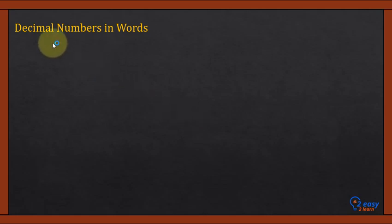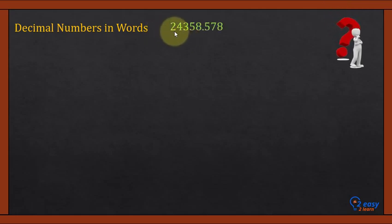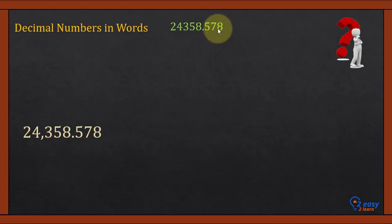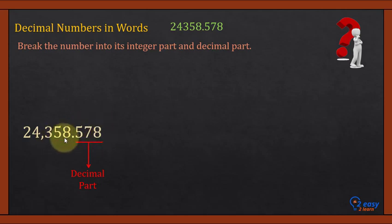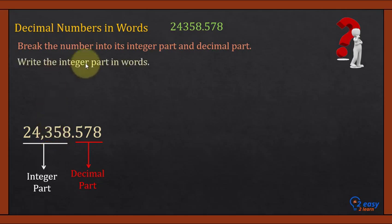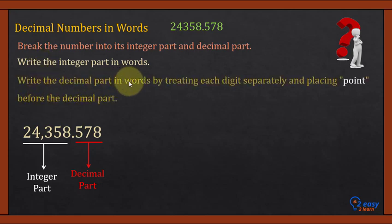Now, how to write decimal numbers in words? For example, we have the number 24,358.578. Break the number into its integer part and decimal part. After the decimal point is the decimal part, and before the decimal point is the integer part. Write the integer part in words, then write the decimal part in words by treating each digit separately and placing 'point' before the decimal part.